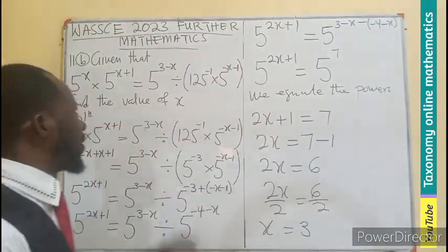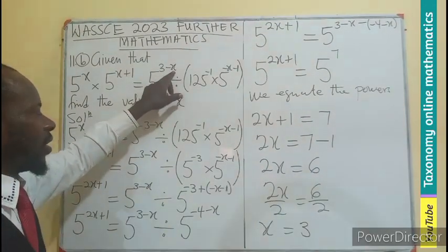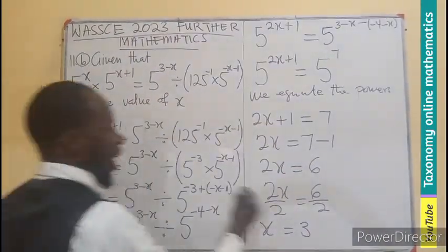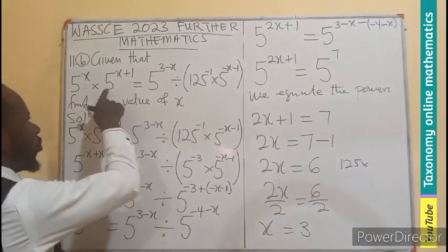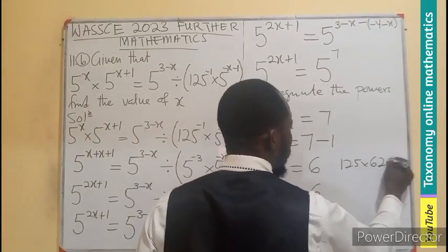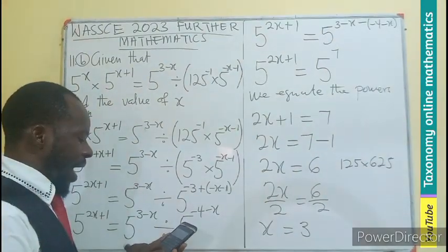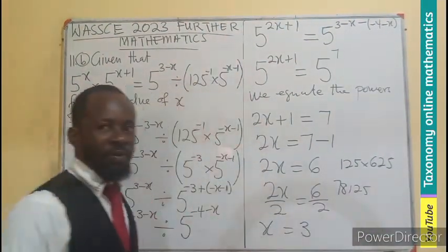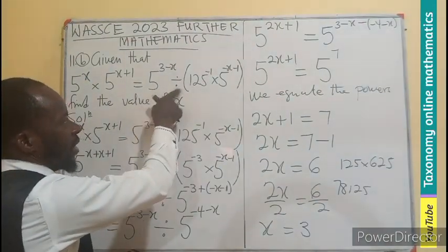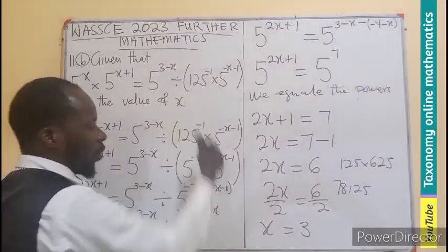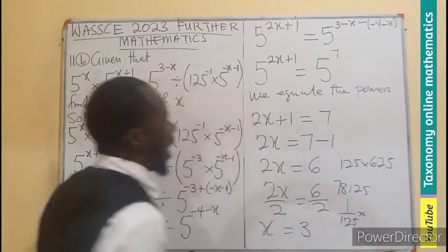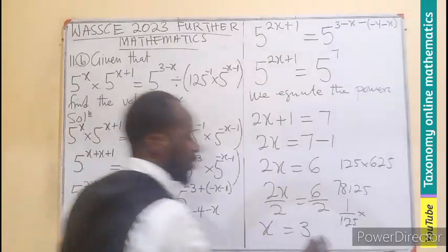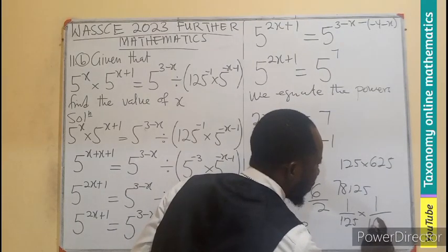Meaning the value of x that will satisfy this expression should be 3. Meaning if you put 3 here, this will be 0. So it means this is going to be 1. So if you substitute this 3 here, that will become 125 times 625. So this will become 625. So when you multiply 625 by 125, we are having 78,125. That is for the left. Already we know this is going to be 1. So 1 divided by 125 times 625, where we put our 3 here, it becomes negative 3 minus this negative 4. So that will also be 1 out of 78,125.